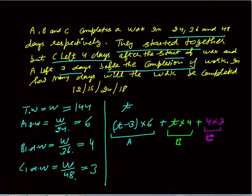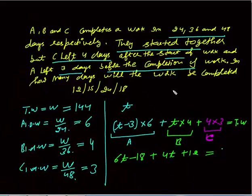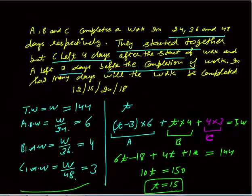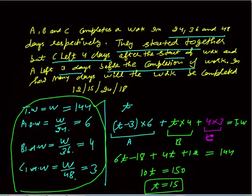The sum of all work must equal the total work of 144 units. So: 6(T−3) + 4T + 12 = 144, which gives 6T − 18 + 4T + 12 = 144. You get 10T = 150, so T = 15 days. This medium-difficulty question can be solved in less than one minute by just forming one simple equation.